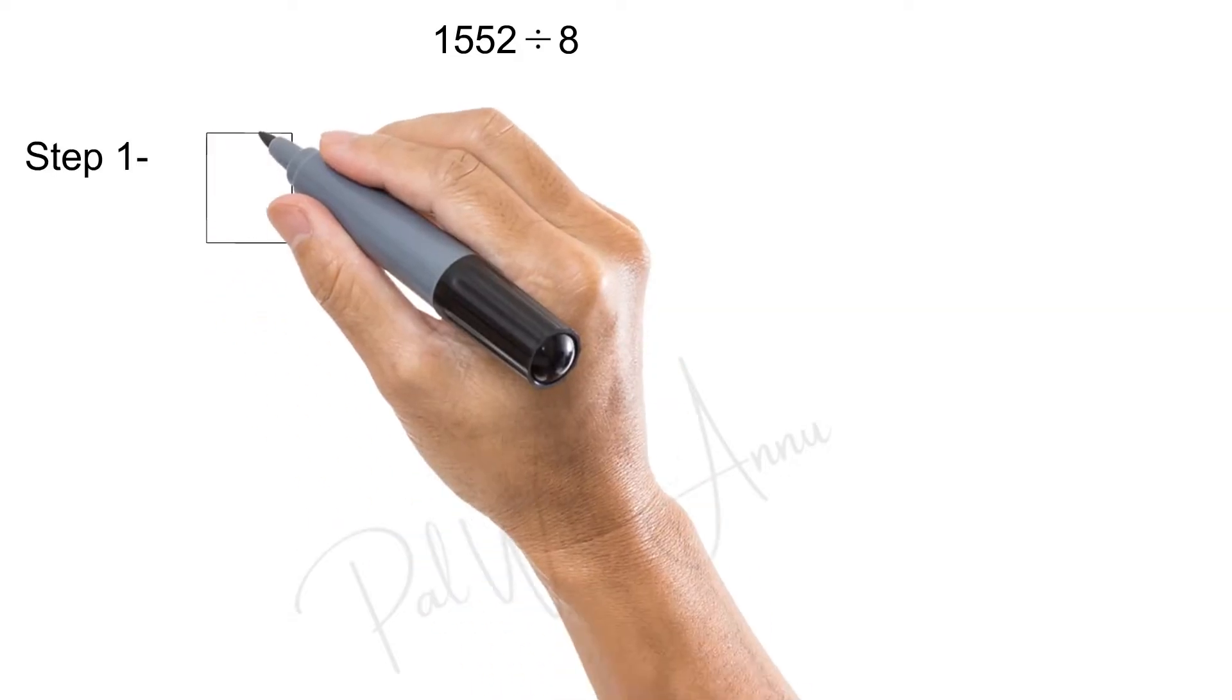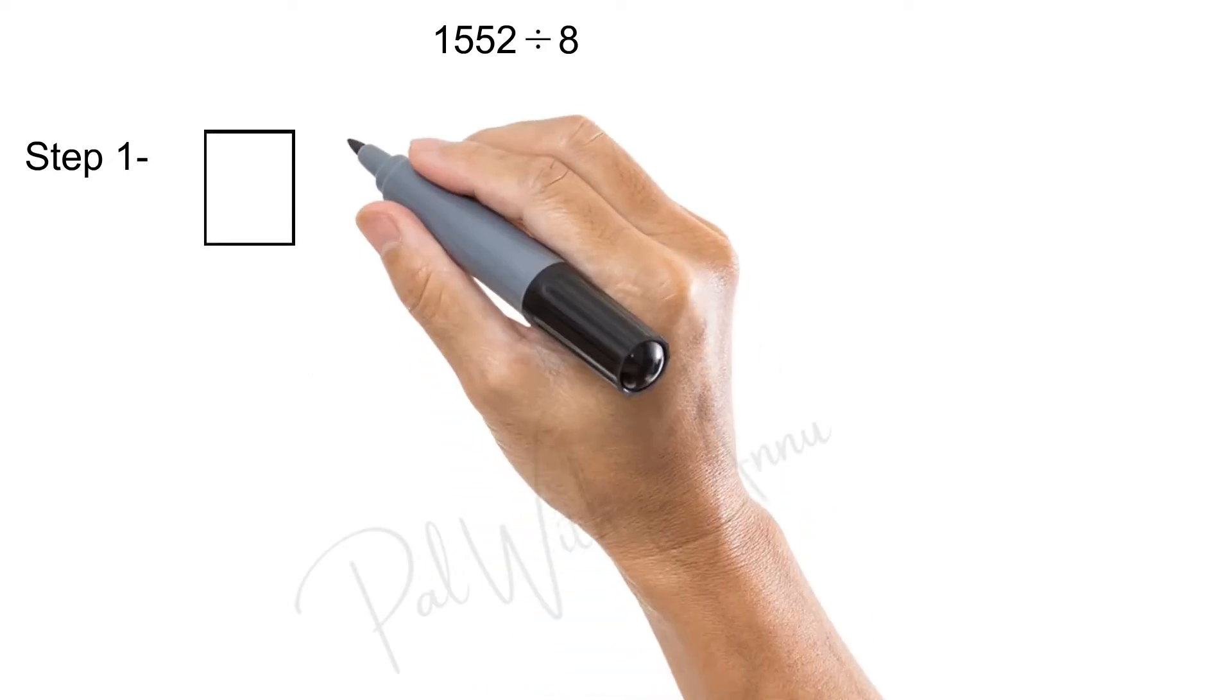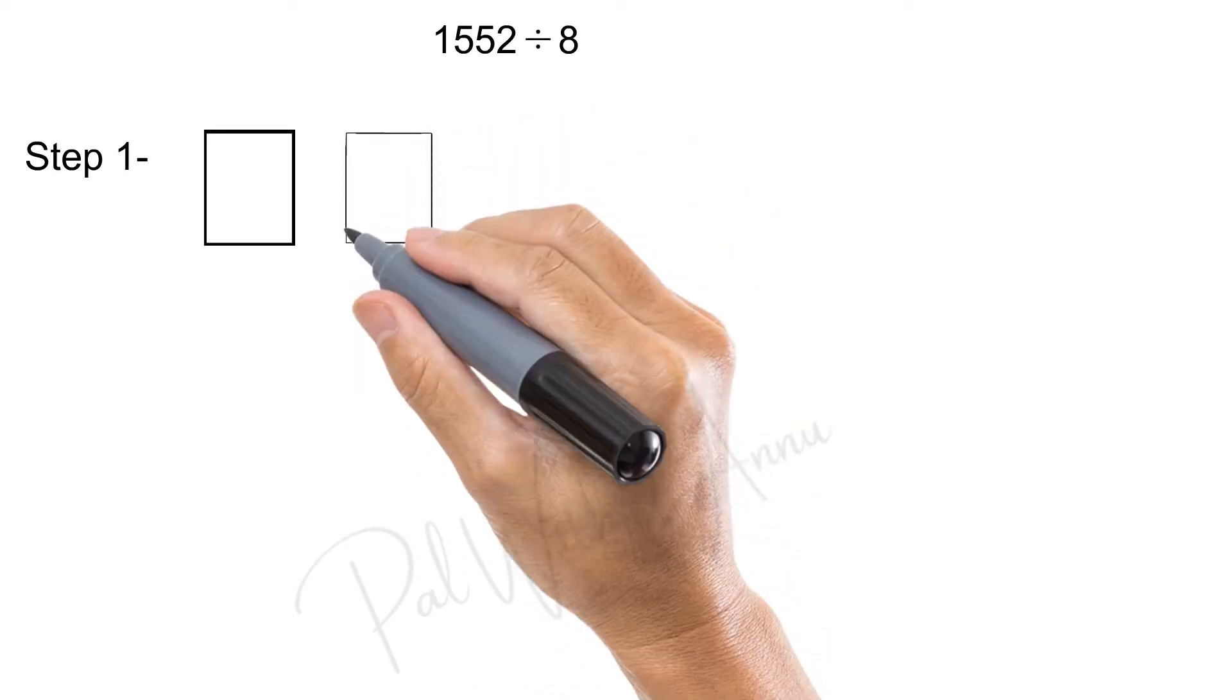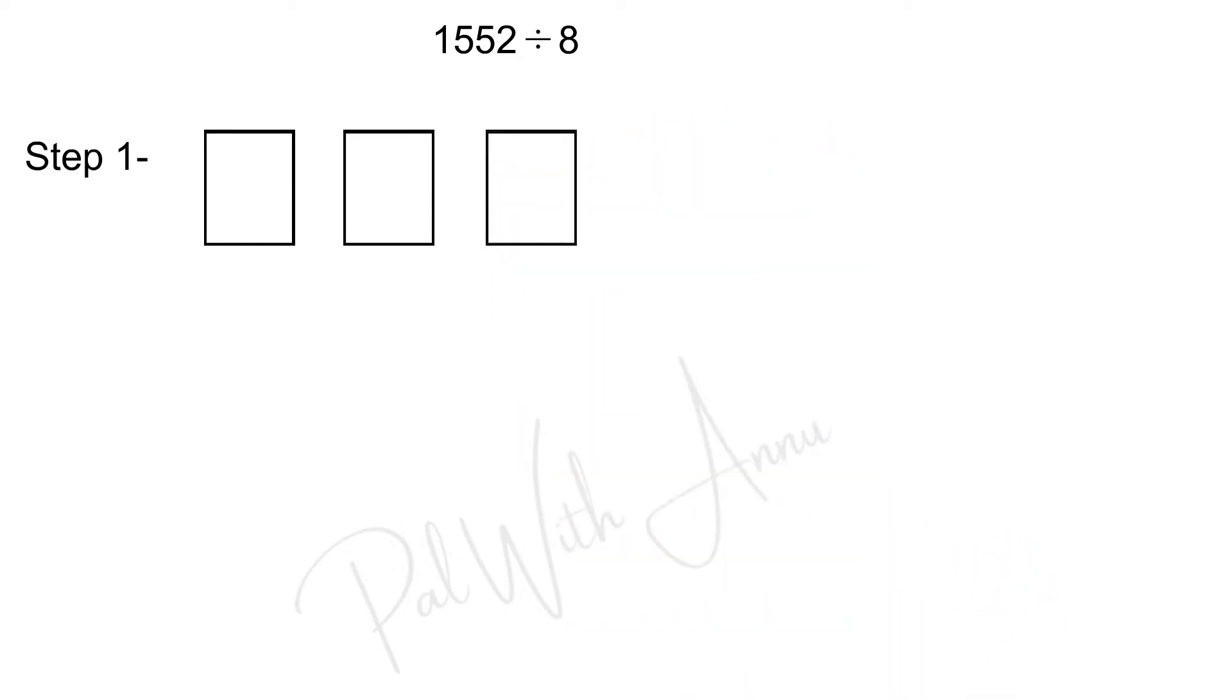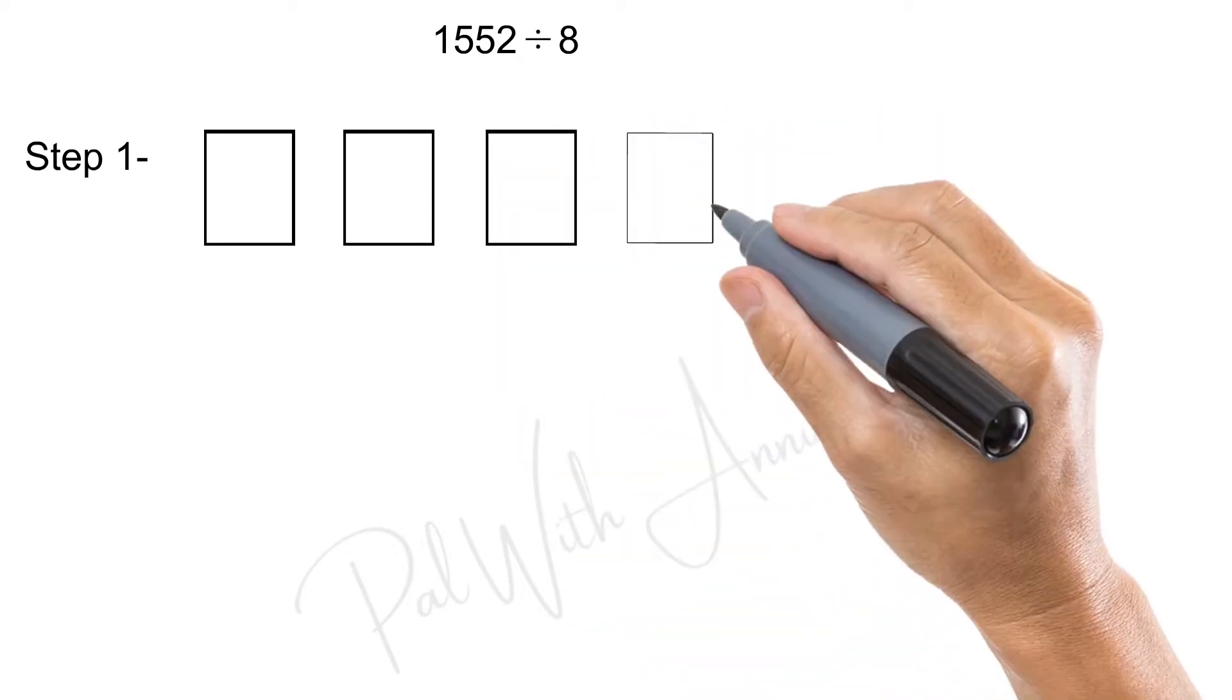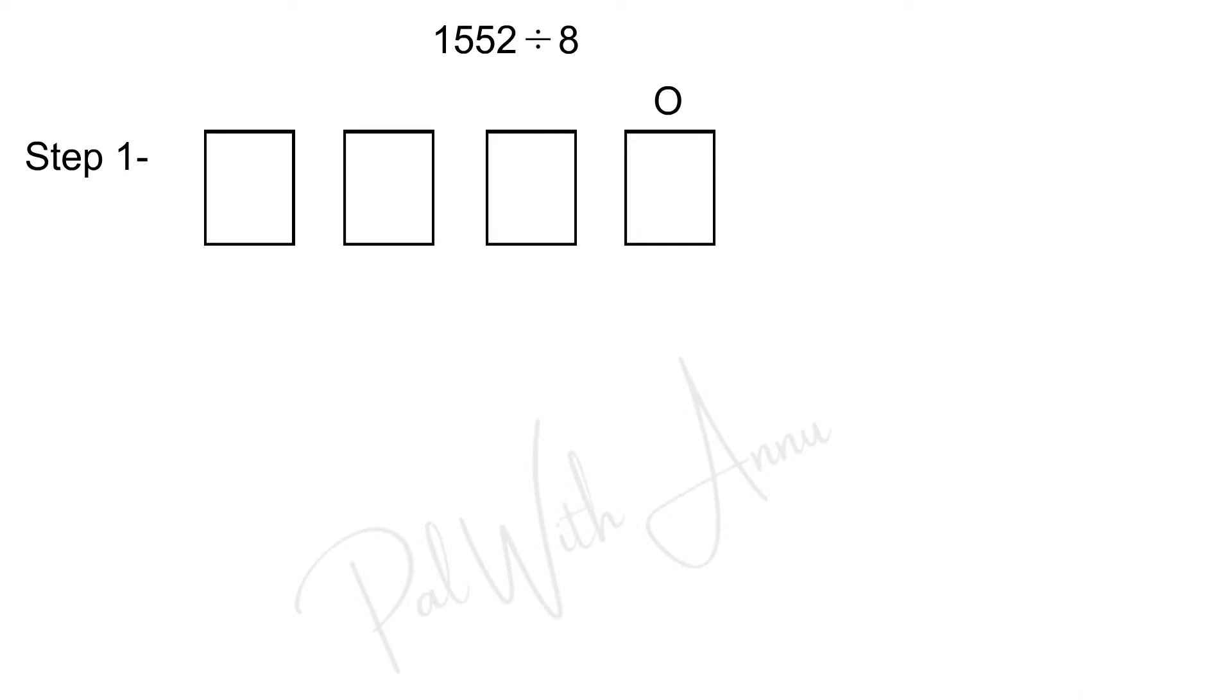Now, step 1. So, there are 4 digits in dividend. We need to put 4 boxes: 1's box, 10's box, 100's box, 1000's box. Now, which digit is there in 1000's box? It is 1. So, I draw 1 dot in 1000's box.